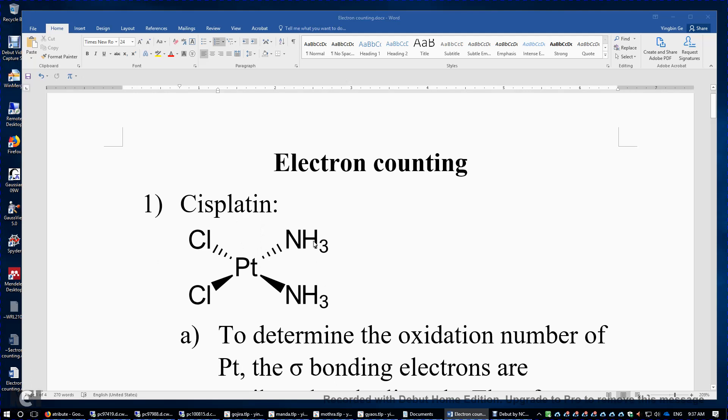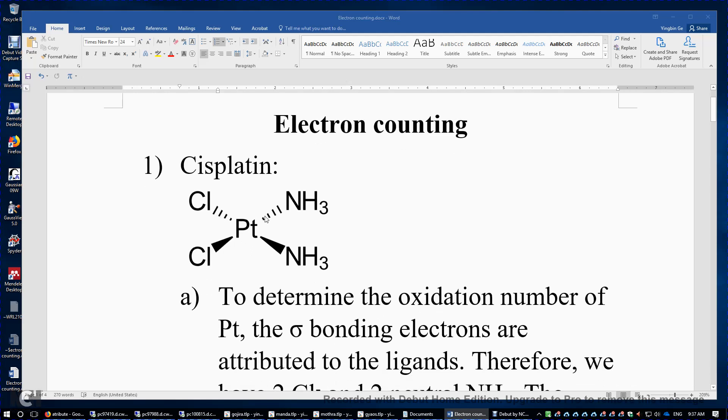So the compound is named diamine dichloridoplatinum(II). To determine the oxidation number of the transition metal, you first need to allocate the sigma bonding electrons to the ligands. Therefore you have chlorine minus, chlorine minus, and then two neutral ammonia molecules. Therefore the oxidation number of platinum must be 2.